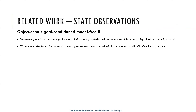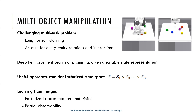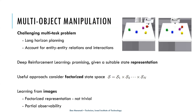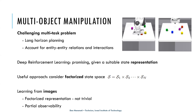A question was raised: is the factorization of state space something you learn or assume is given? From images, you would need to learn it since it's not given, but it's something you aspire to. In simulation it's more straightforward — you have the states of each object and just need to represent them as a set rather than, for example, a single concatenated vector.